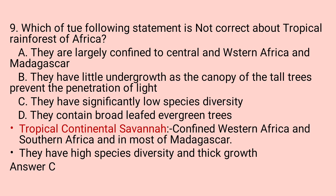Question number nine: Which of the following statements is NOT correct about tropical rainforests of Africa? A. They are largely confined to Central and Western Africa, as well as Madagascar. B. They have little undergrowth, as the canopy of tall trees prevents light penetration. C. They have significantly low species. D. They contain broad-leaved evergreen trees.